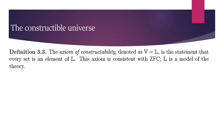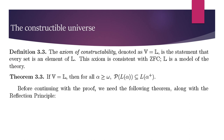Definition 3.3: The axiom of constructibility, denoted V = L, is the statement that every set is an element of L. This axiom is consistent with ZFL, and L is a model of the theory. Theorem 3.3: If V = L, then for every alpha ≥ ω, the power set of L(α) is a subset of L(α⁺), where α⁺ denotes the successor cardinal of alpha.